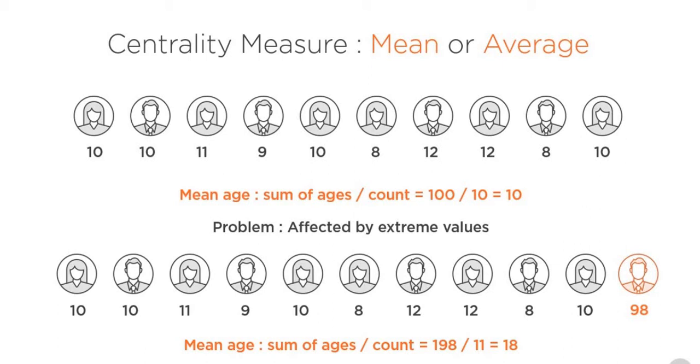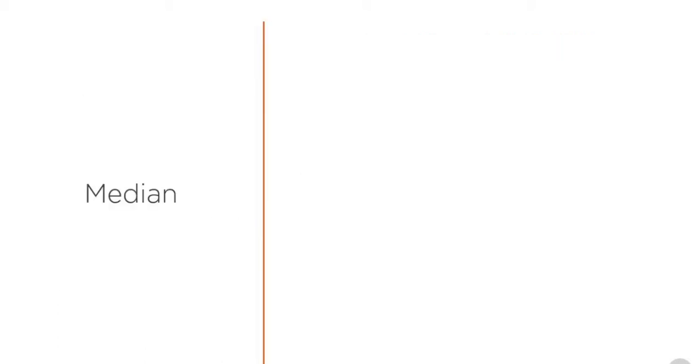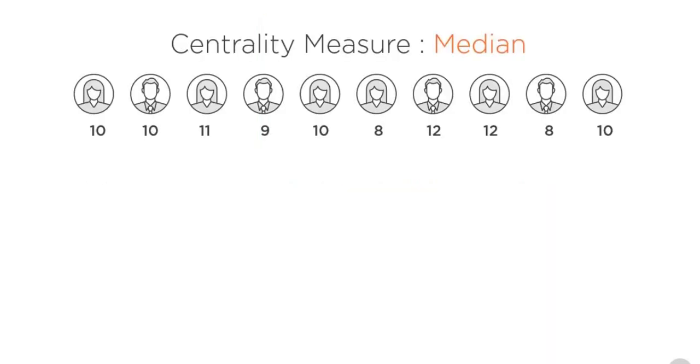Another centrality measure that can help us to get rid of this issue of extreme values is called median. Median represents the middle value in the sorted list of values. Let's again take the age example.